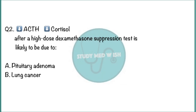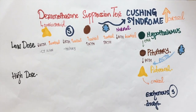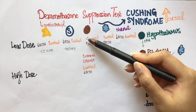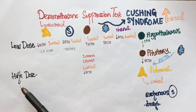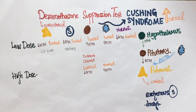Question 2: Low ACTH, low cortisol after high-dose dexamethasone suppression test is likely to be due to — option A, pituitary adenoma; option B, lung cancer. In this test, 8 mg of dexamethasone is given. High-dose dexamethasone is able to suppress the ACTH produced by the pituitary adenoma, so the results in such a case would be low cortisol and low ACTH. However, high-dose dexamethasone does not suppress the ACTH produced by lung cancer, so the results here would be high ACTH and high cortisol.